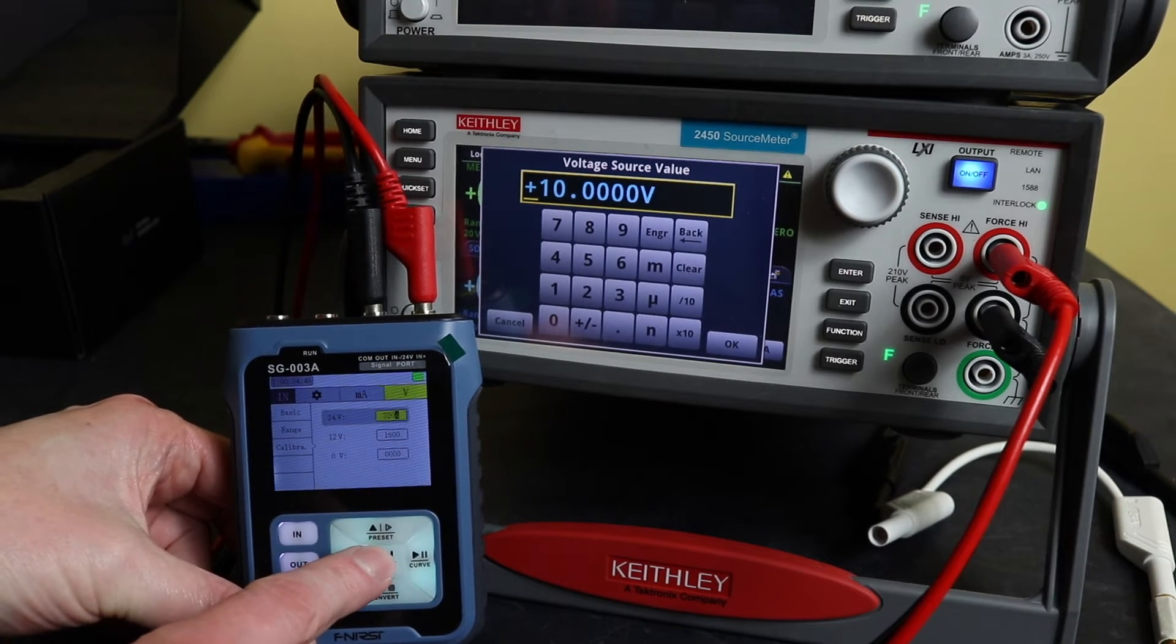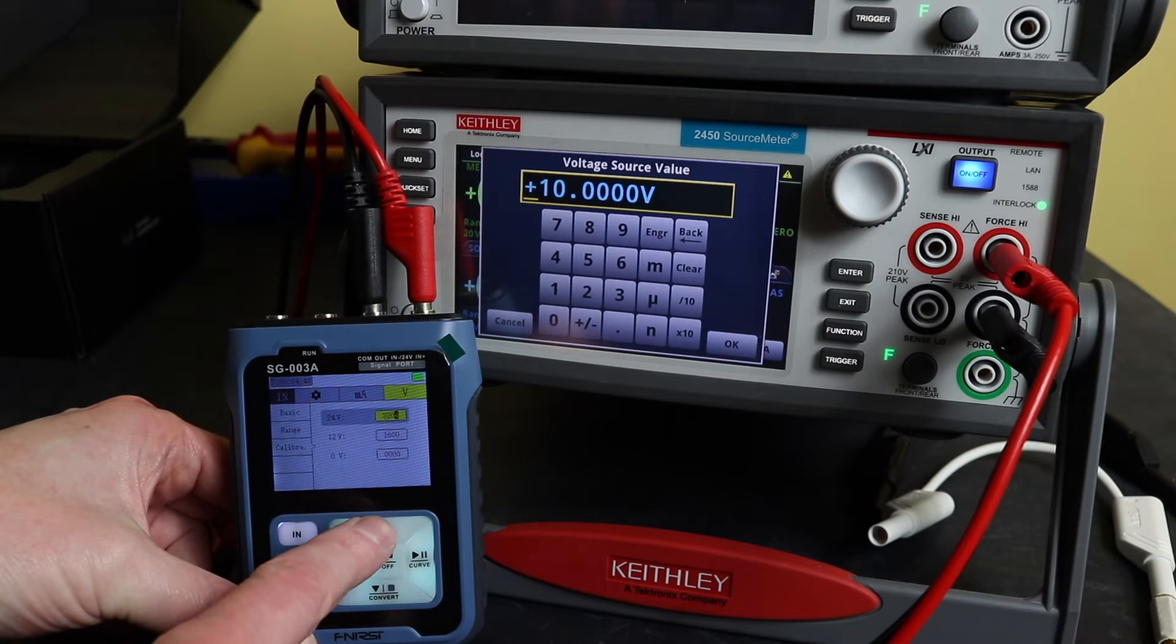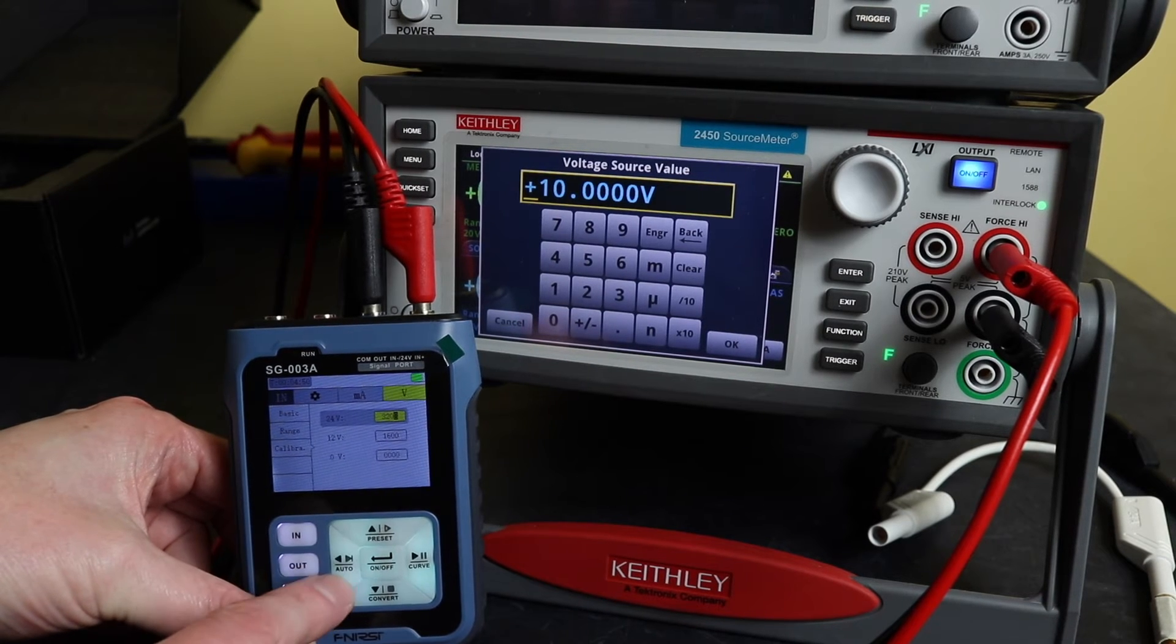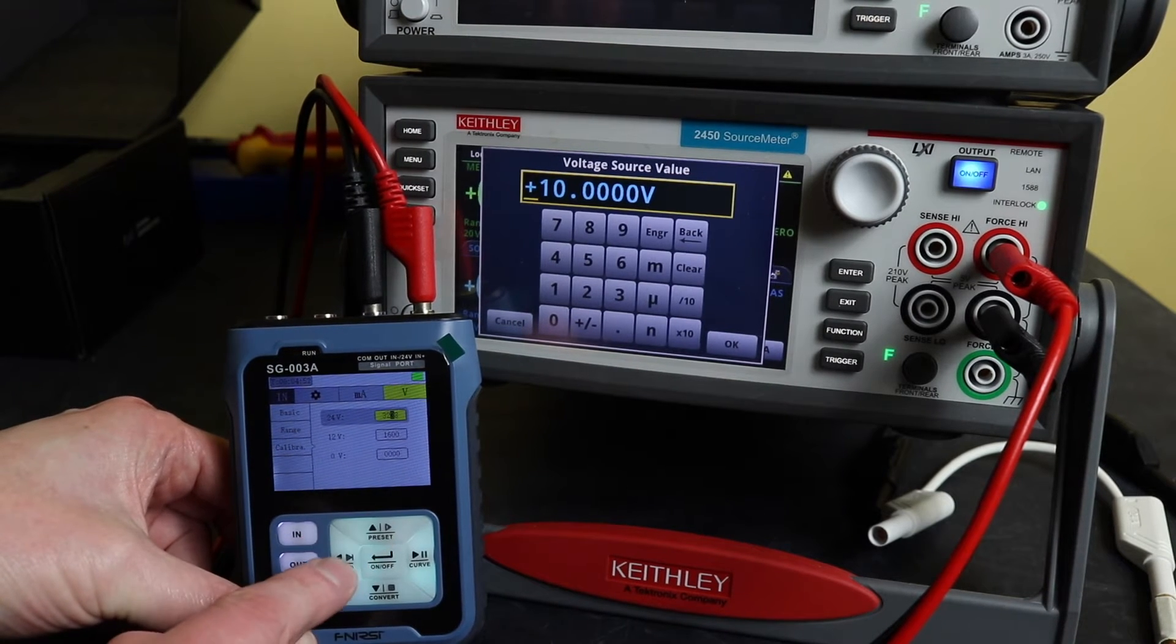Then you can select whichever constant you want to adjust. So if we go for the 24 volt one and I hit the enter again, I'm now in edit mode. I can adjust this manually now, I'm using the cursors here what I want to do.